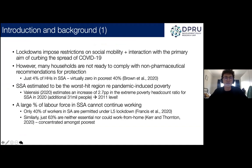Just some background. We know that national lockdowns around the world impose restrictions on social mobility and physical interaction, aimed at curbing the spread of the virus. But many households, particularly in sub-Saharan Africa, were not able to comply with non-pharmaceutical recommendations such as physical distancing. An earlier paper by Brown et al. found that in sub-Saharan Africa, just 4% of households were able to comply, and virtually zero in the poorest 40% of households.